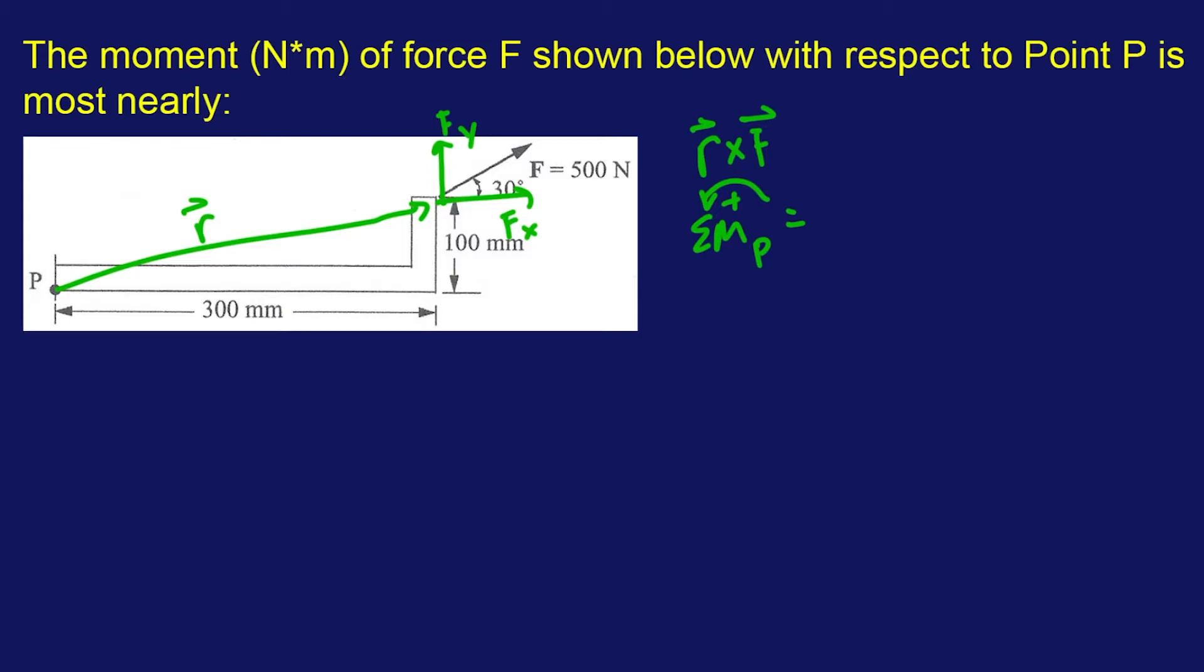So F X, that's going to cause rotation in the opposite direction. So that's going to be opposite direction that we defined. That's going to be F X, which is going to be 500 cosine of 30 degrees times the distance. So 100 millimeters, which is 0.1 meters. We need SI because it says newtons per meter.